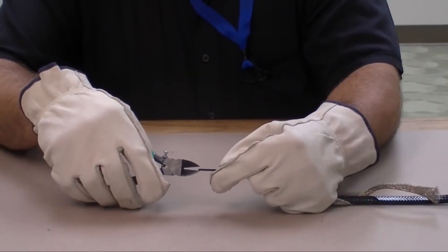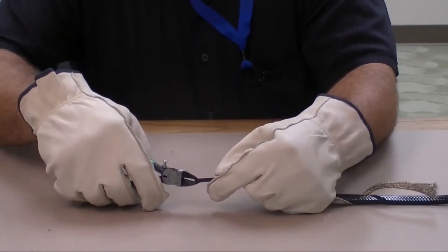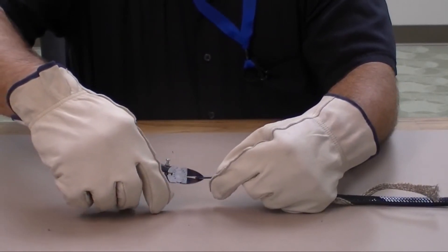To strip the core, carefully notch the end of the cable with the diagonal cutter without cutting the bus wires.